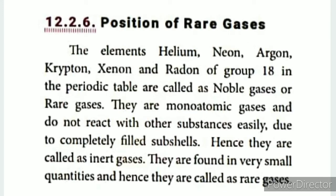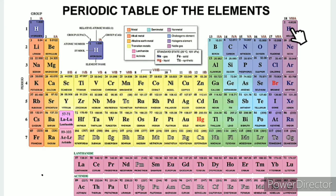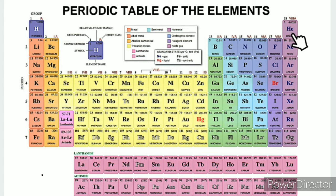Position of rare gases in the periodic table. The rare gases are: Helium, Neon, Argon, Krypton, Xenon, and Radon. They are called rare gases because their outermost shells are completely filled with electrons. Because of this, they are rare gases - they are stable and do not easily react with other elements.